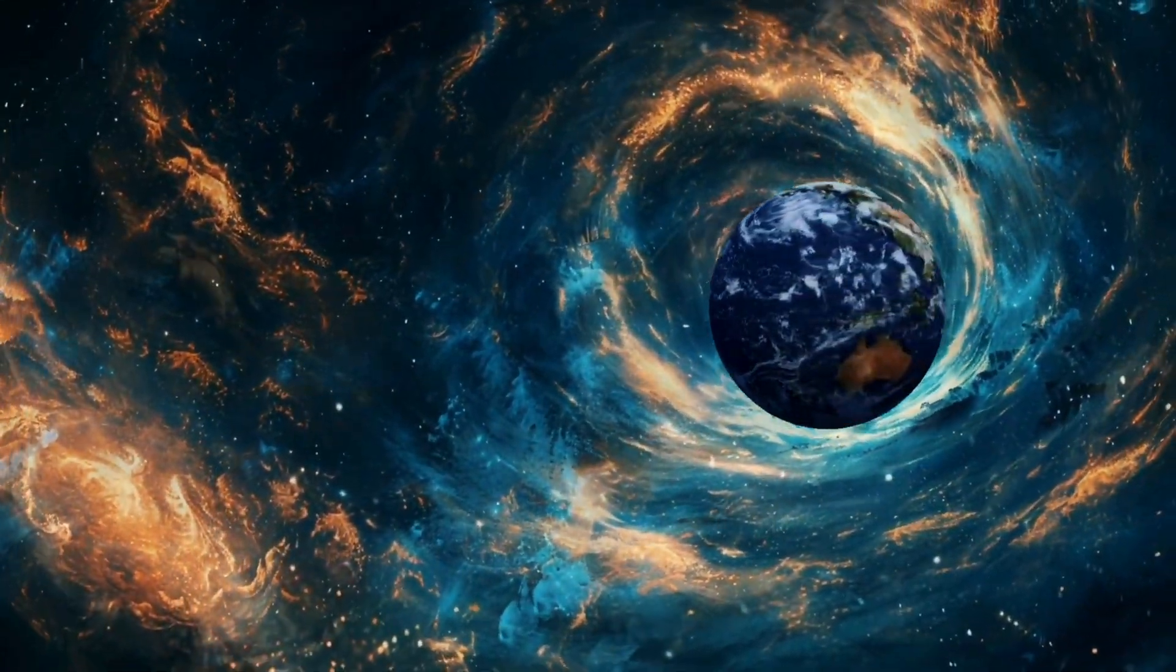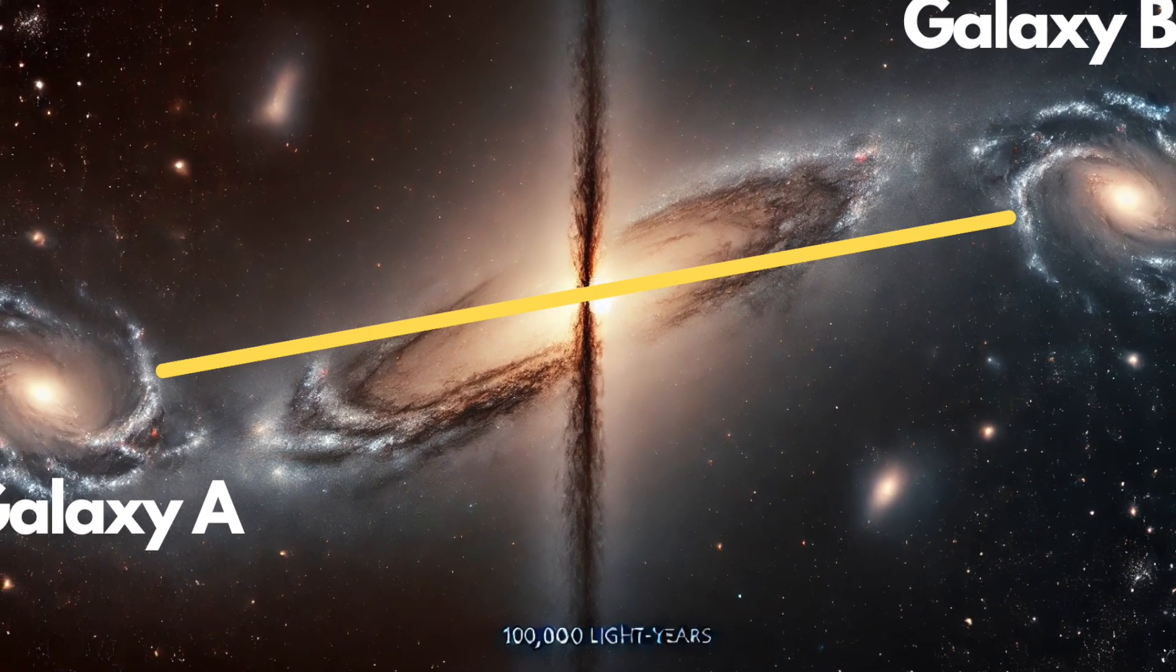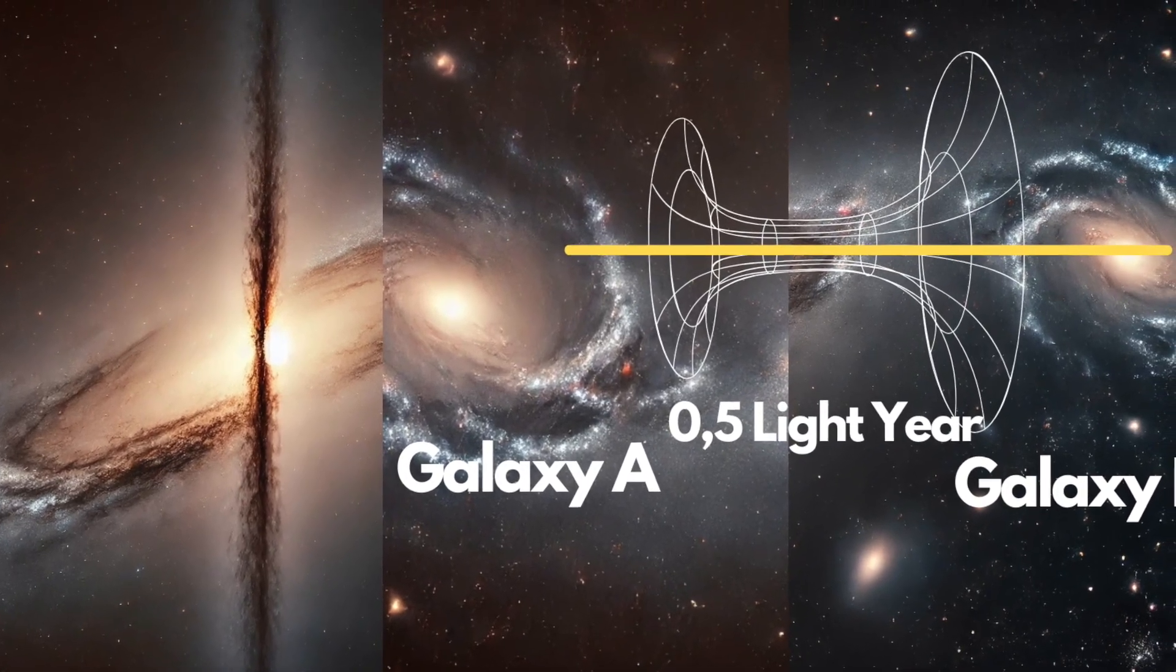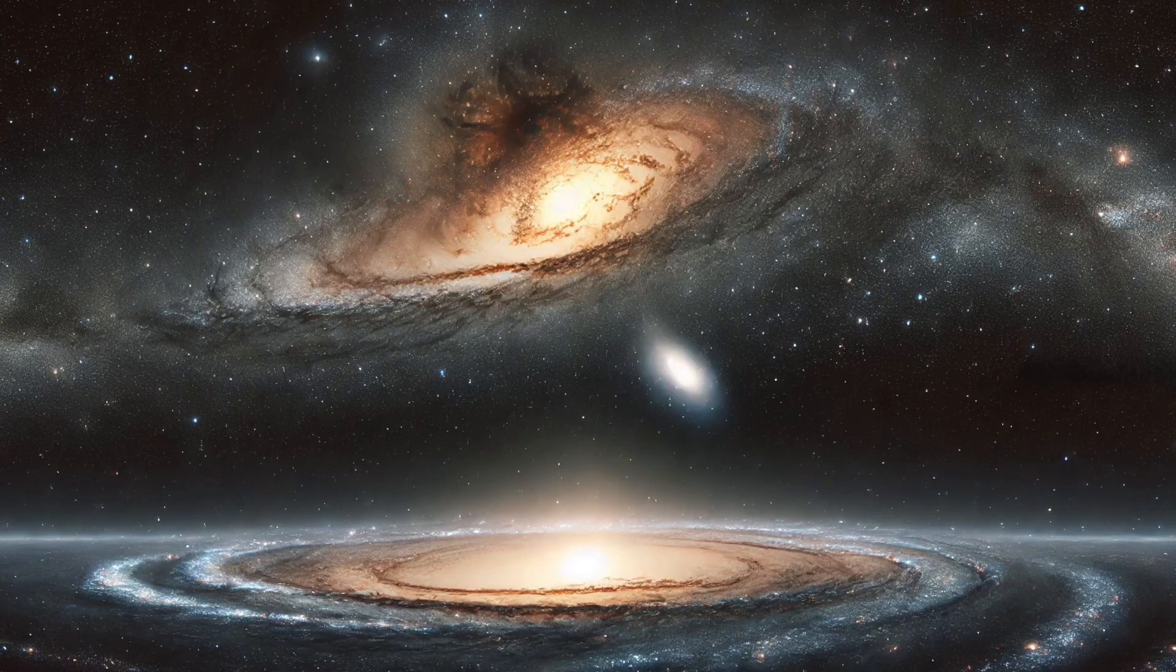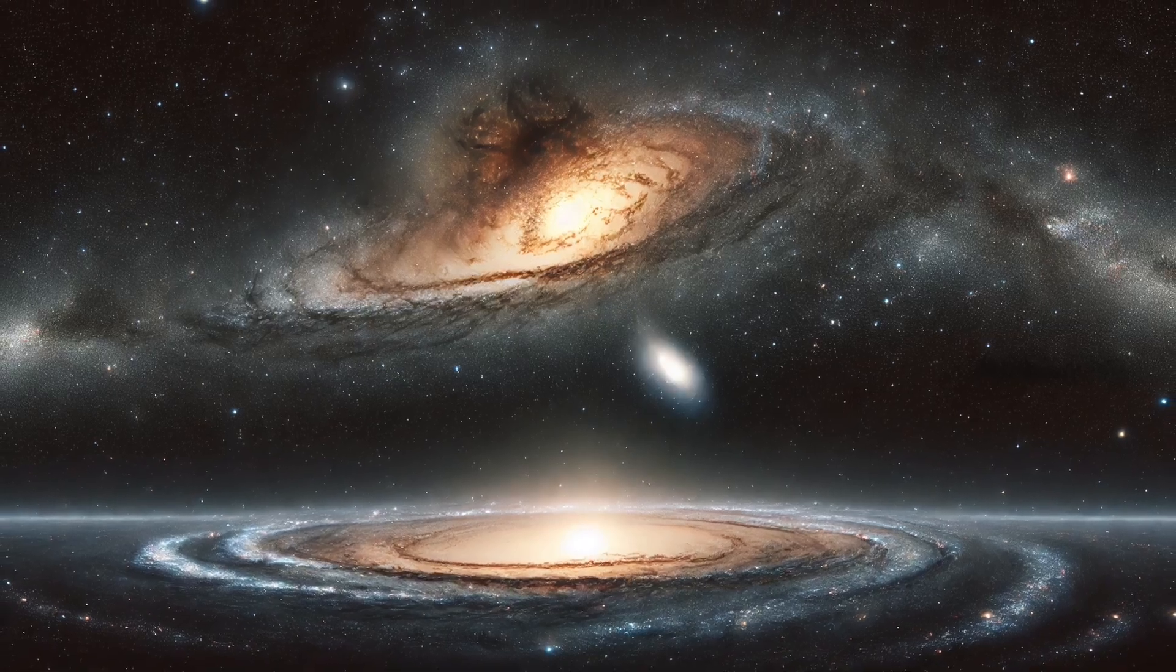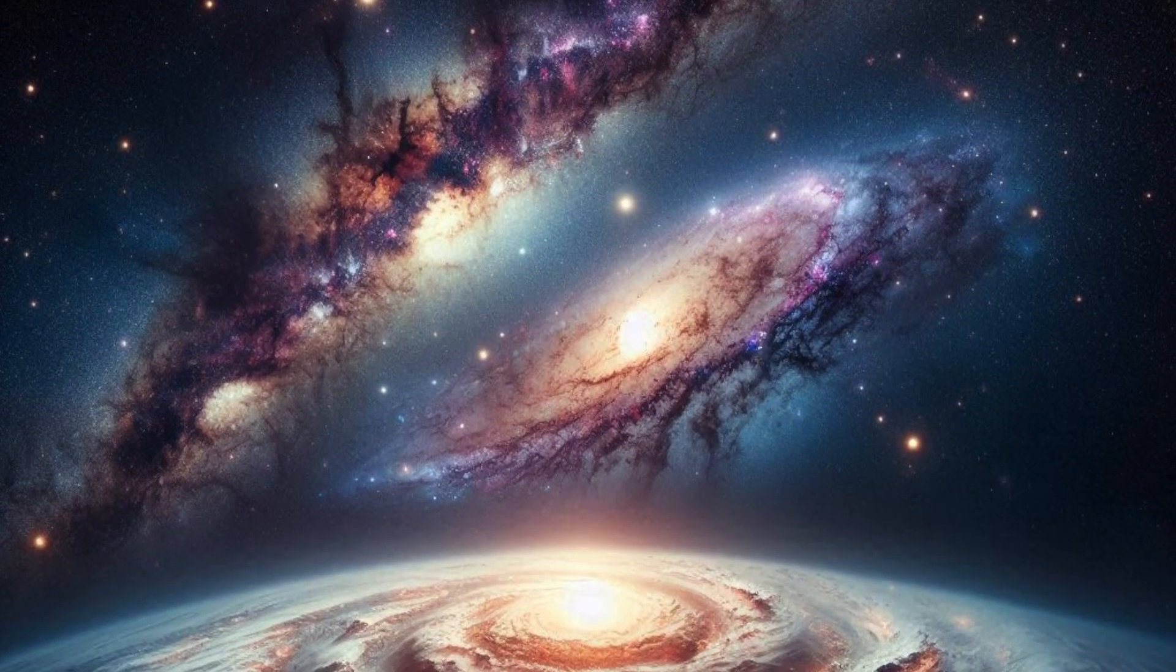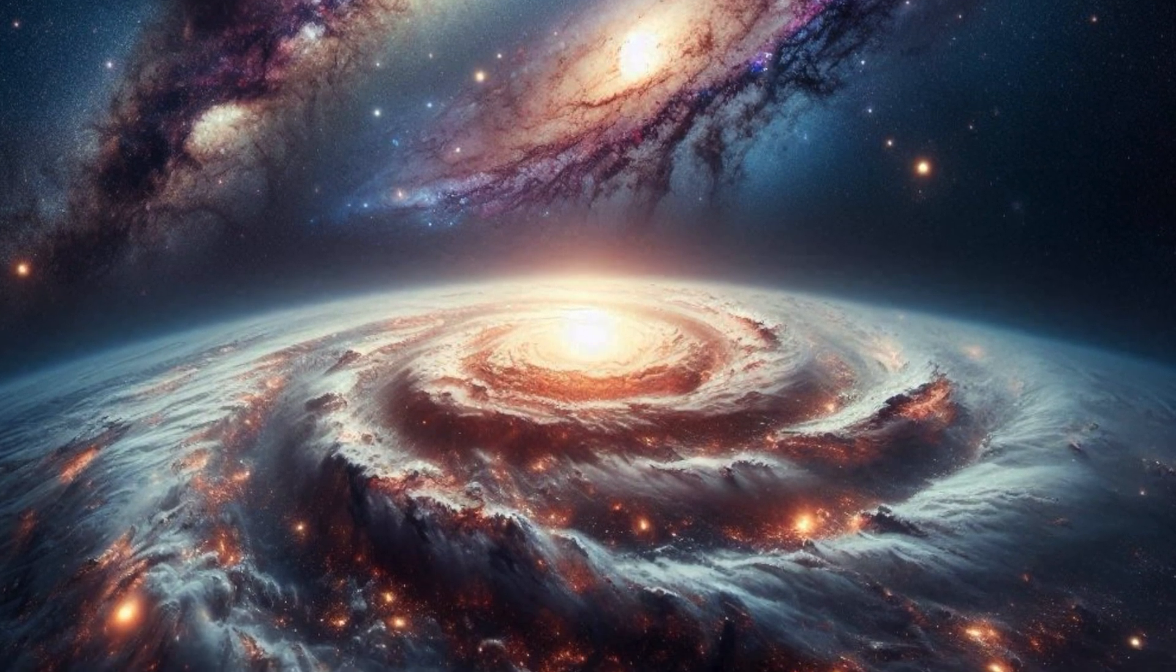Einstein's wormholes could theoretically serve as shortcuts between two points, dramatically reducing travel time. For example, even traveling at the speed of light, reaching the nearest galaxy would take 2.5 million years. A wormhole could hypothetically shorten this journey to about an hour. This is due to the intense gravitational field bending space-time to form a tunnel, effectively shortening the distance.